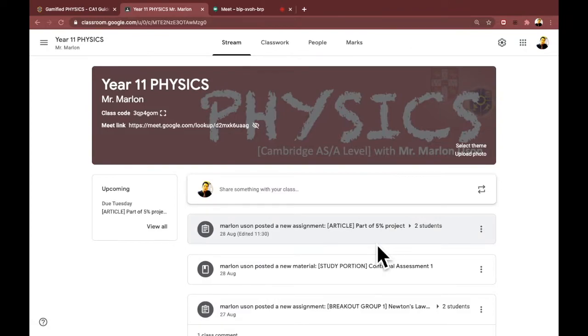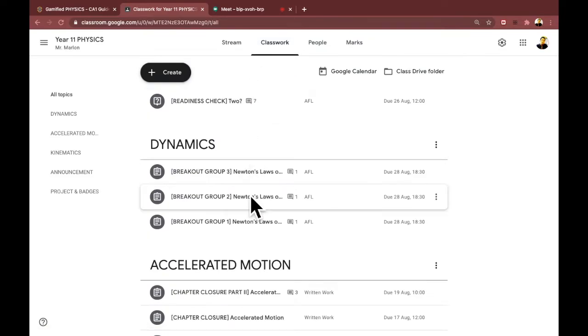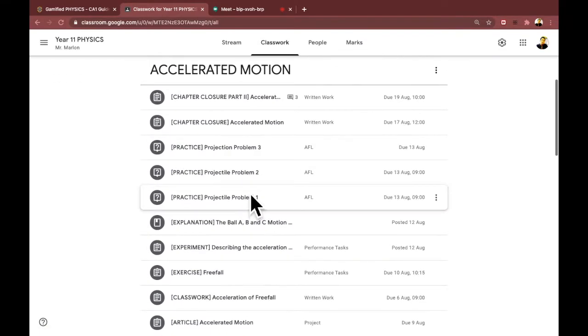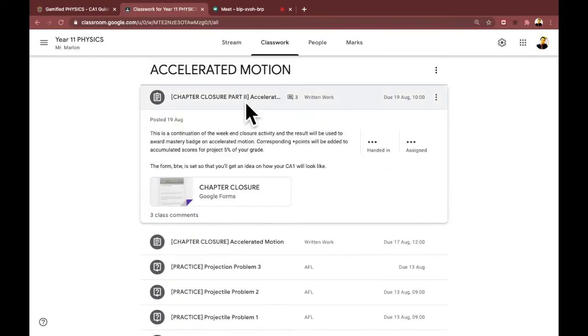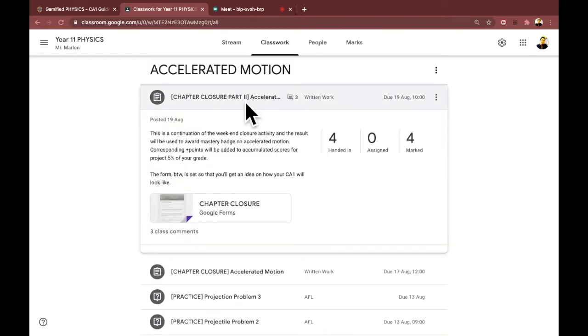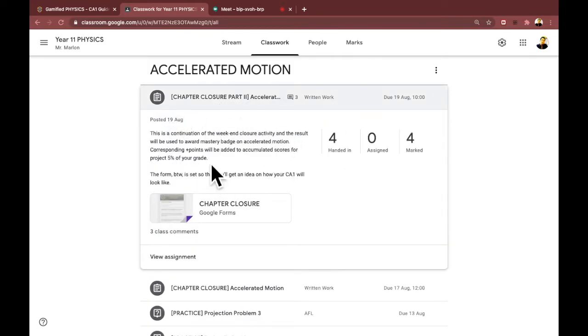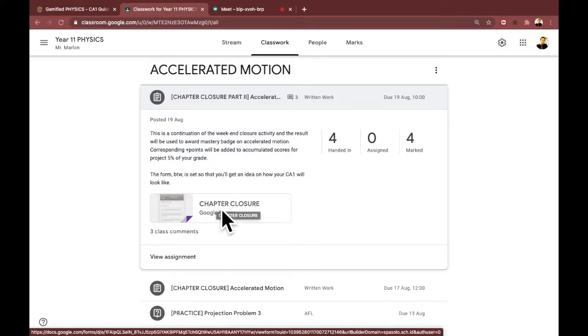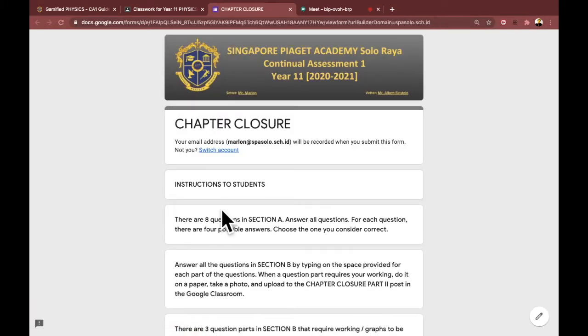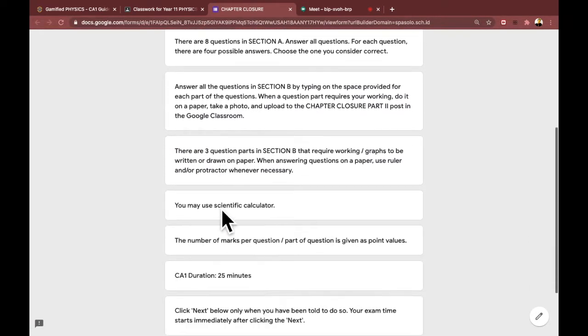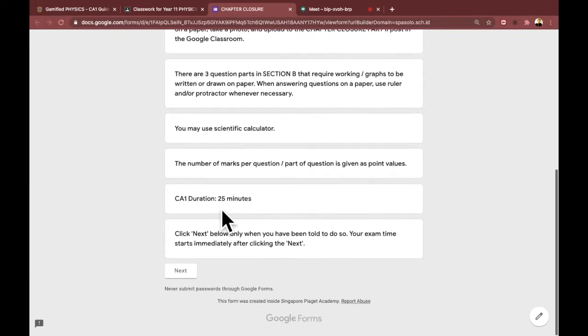You should see it here at the top part of the messages on the stream tab. Just to show you how the post should look like, you should see something like this with some instructions from your teachers and an attached Google form. You should click the attachment like that and the form appears in another tab. Immediately read the instructions written in the front page of the form. Do not click next yet.